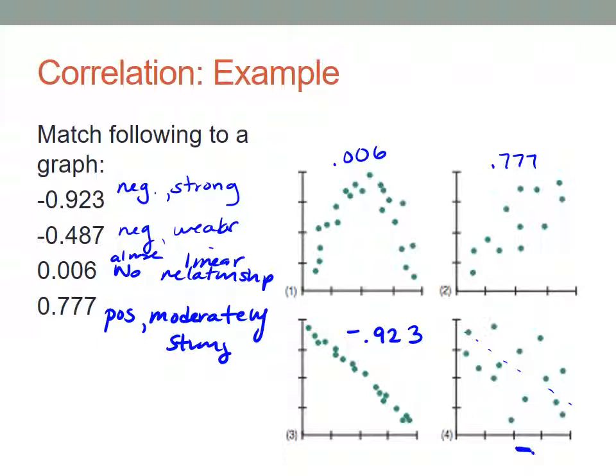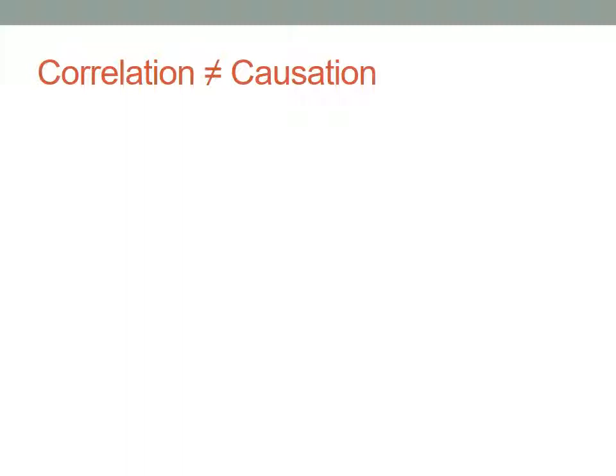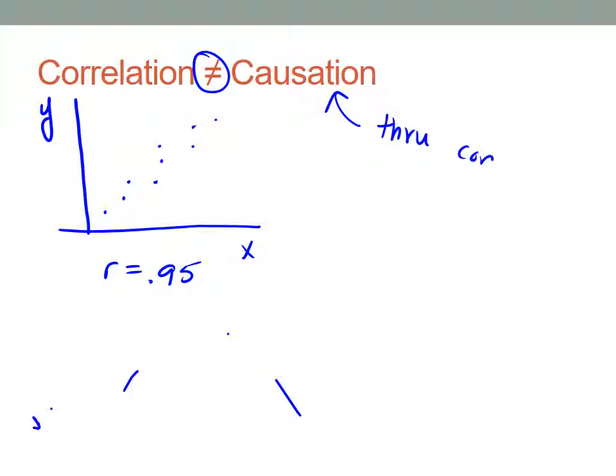Just one last note about correlation: just because you find a strong relationship between two variables X and Y with a correlation coefficient of .95, that doesn't mean X is causing Y to happen. Just because you find a strong relationship doesn't mean that X caused Y to happen. Think back to the scientific method section - causation can only be proved through controlled experiments. Be careful that you do not fall into that trap.